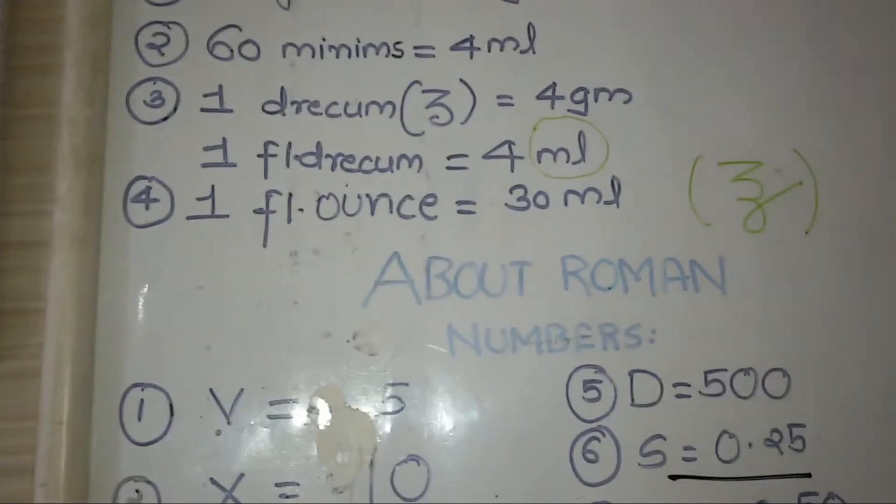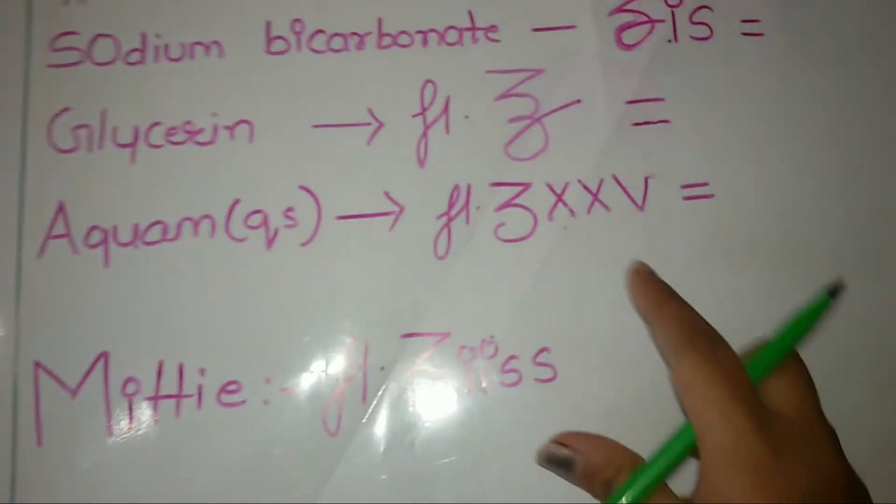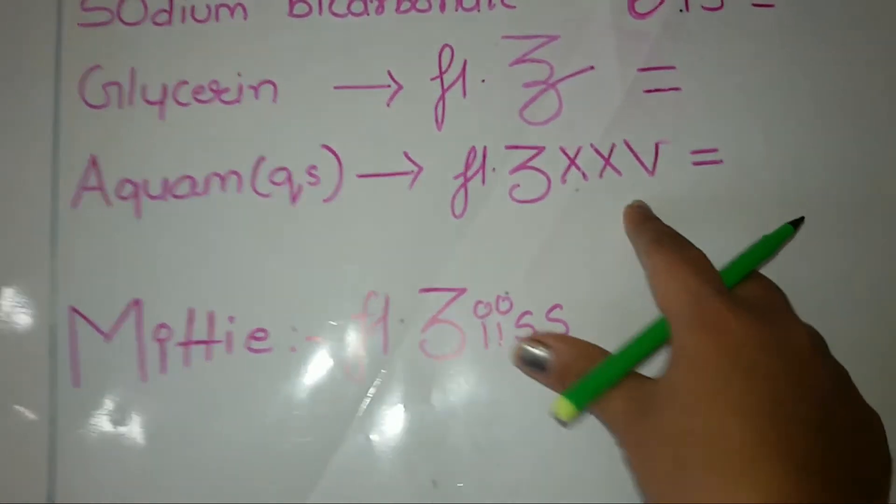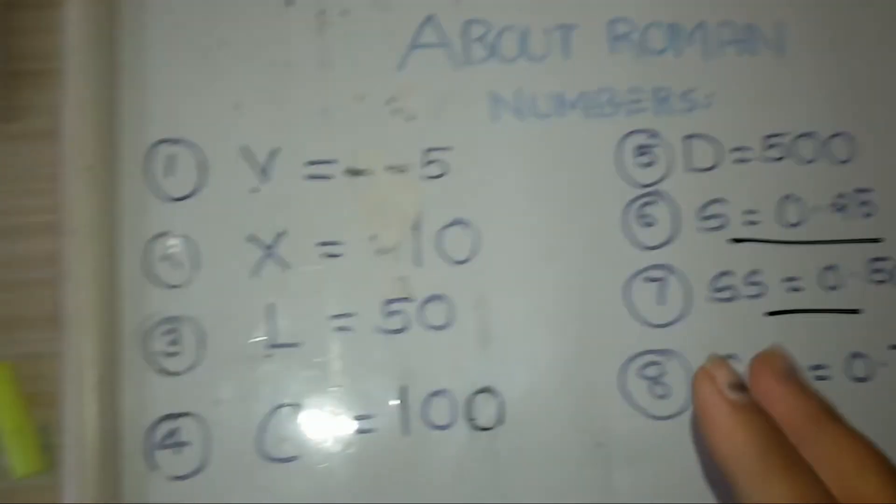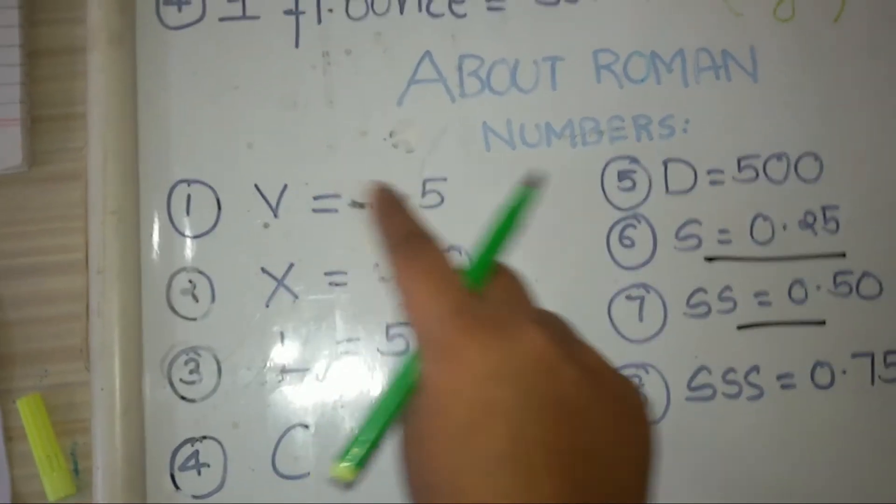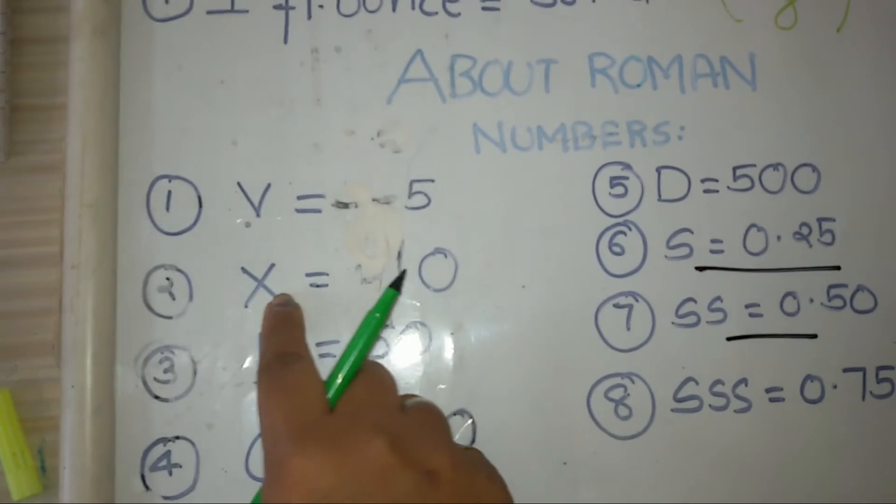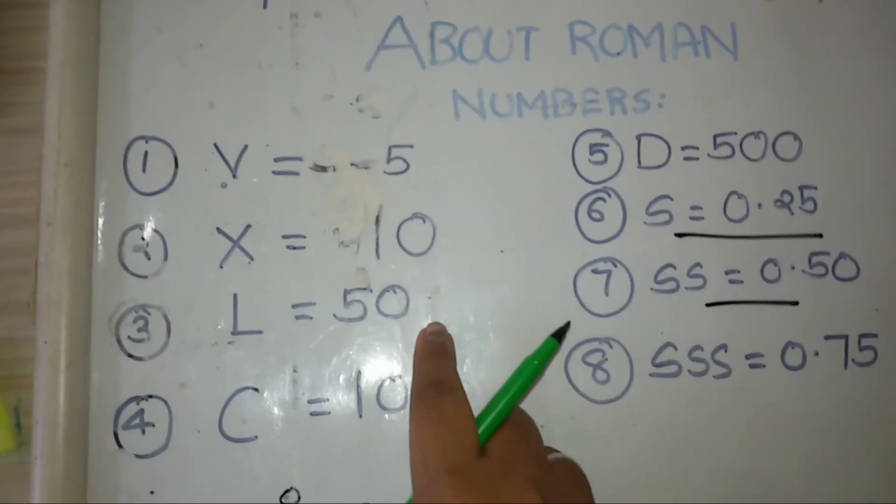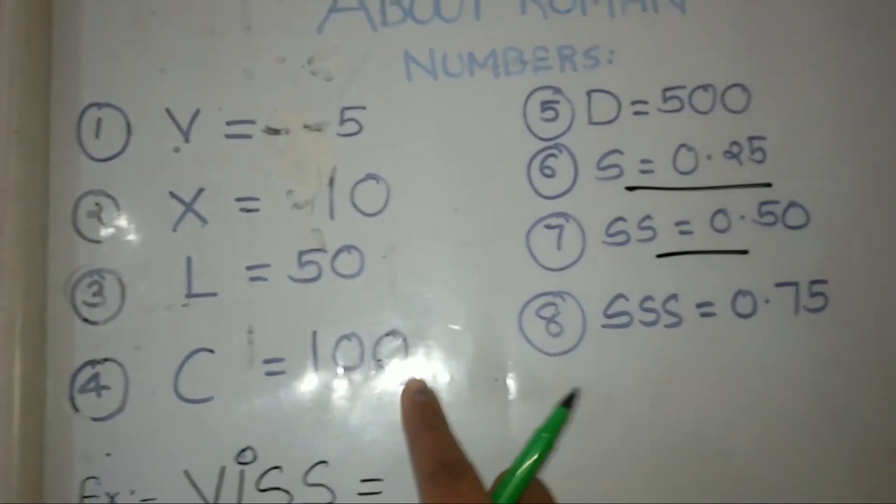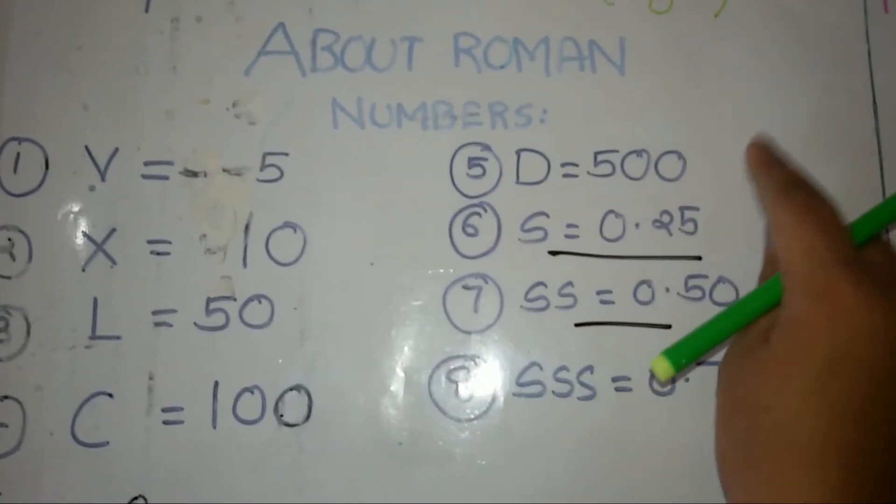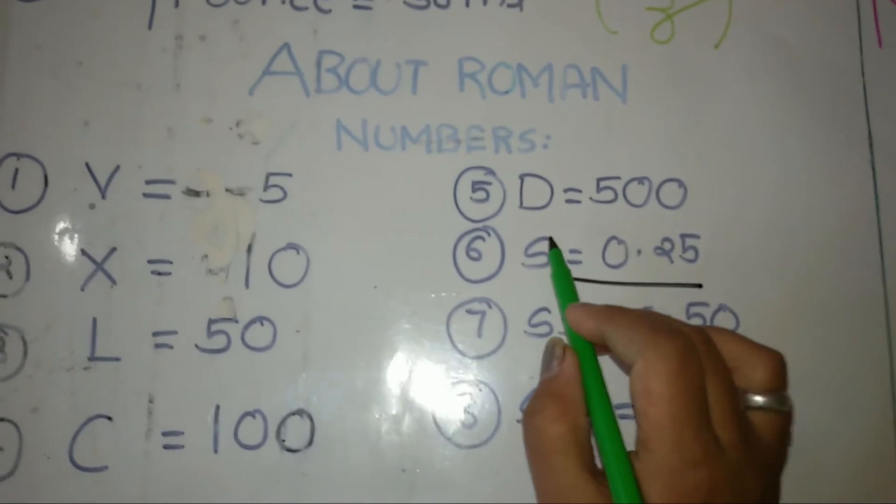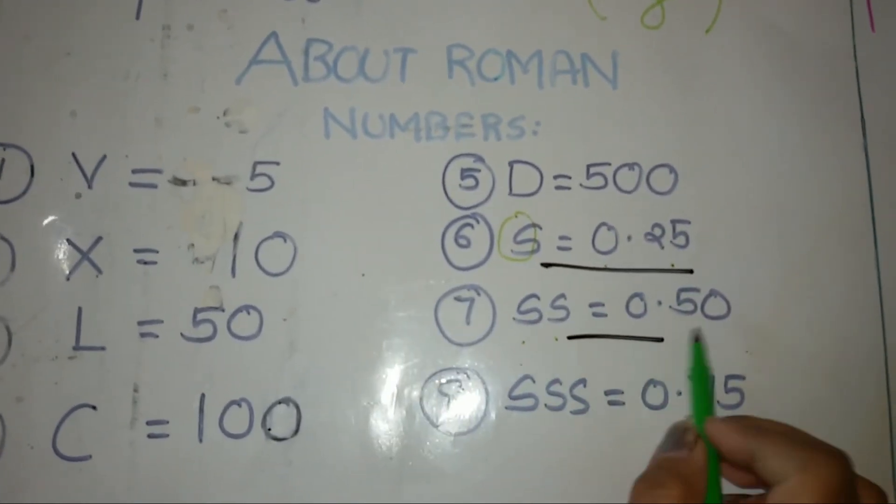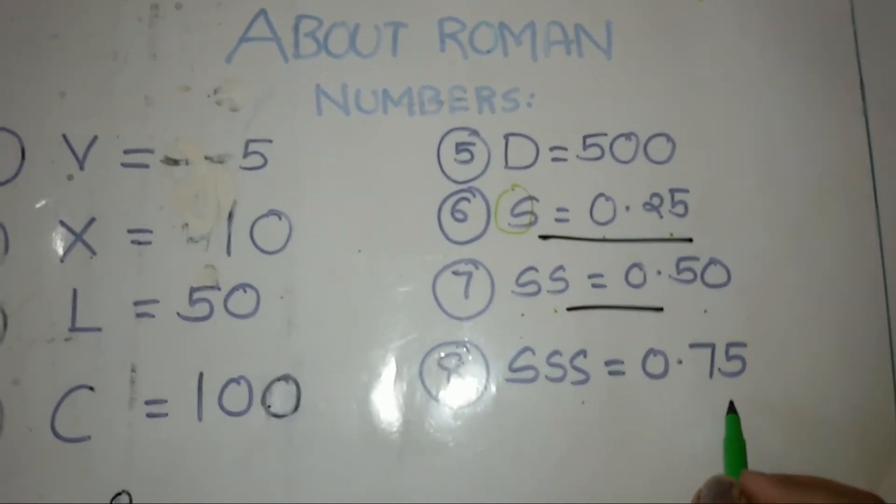Now, for these conversions, you also have to remember about the Roman numbers. In that, the basics are V equals 5, X equals 10, L equals 50, and C equals 100. While D equals 500. In Roman, S equals 0.25, SS equals 0.50, and triple S equals 0.75.